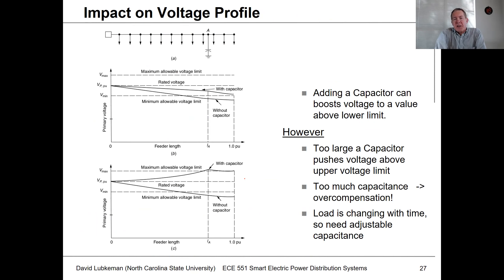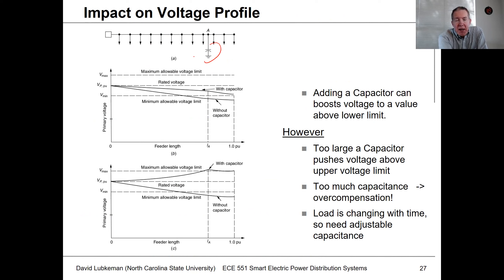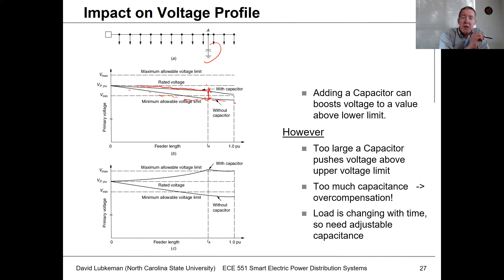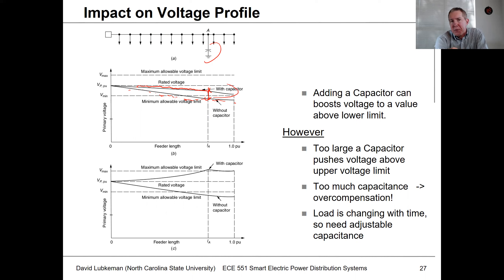If you look at the impact on the voltage profile on a distribution feeder, suppose we put a capacitor toward the end of the circuit. Without the capacitor, you get a curve where the voltage is dropping until we get to the end of the feeder, and perhaps it drops below the minimum acceptable threshold used for planning purposes. To fix this, we put a capacitor in at that point. This has the impact of changing the slope on the curve — we get a voltage rise up to where that capacitor is located, and it changes the slope. We're basically modifying the profile. Once we get past the capacitor, we have the normal voltage drop as before.